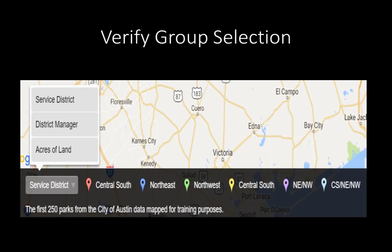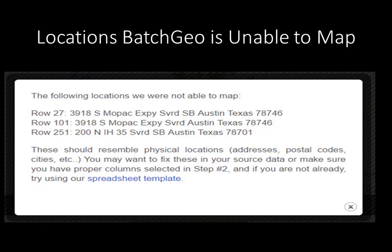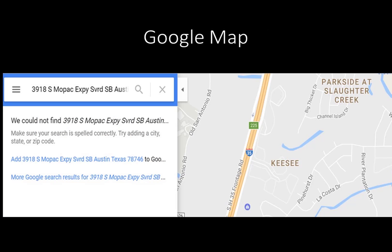If everything in the map preview is good, press the Save and Continue button to create the final map. The map is generated without correcting the addresses from the warning note in the preview; however, an error message was generated. These three locations were not included in the final map due to an error in the address. BatchGeo uses Google Maps to generate their maps, and these three addresses could not be found in Google Maps.